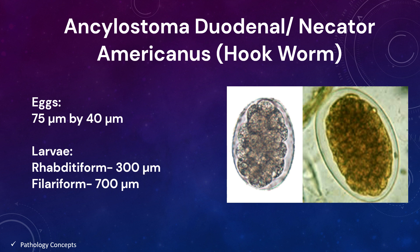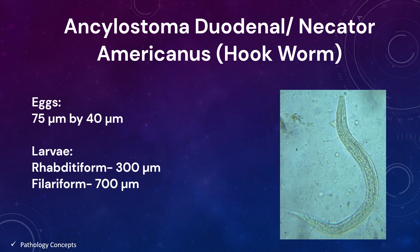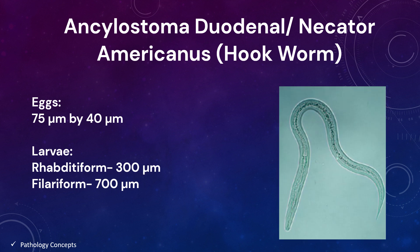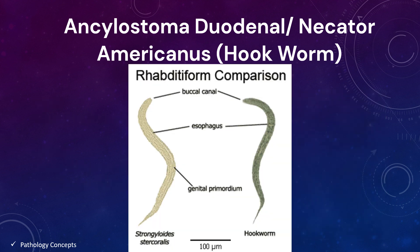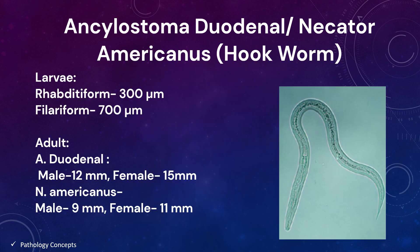Eggs of Ancylostoma and Necator cannot be differentiated microscopically. They are thin-shelled, colorless, and measure approximately 75 microns by 40 microns. Two important larvae: the rhabditiform larva hatches from the egg and is 300 microns long with a long buccal canal and inconspicuous genital primordium. If larvae are seen in stool, they must be differentiated from the L1 larva of Strongyloides stercoralis. The infective third-stage filariform larva is 700 microns long with a pointed tail, and the esophagus-to-intestine ratio is approximately 1:2.